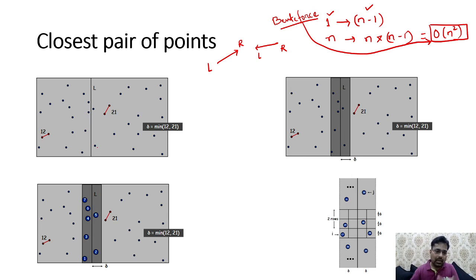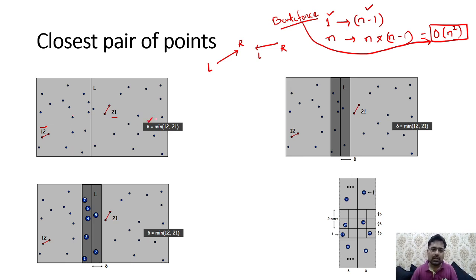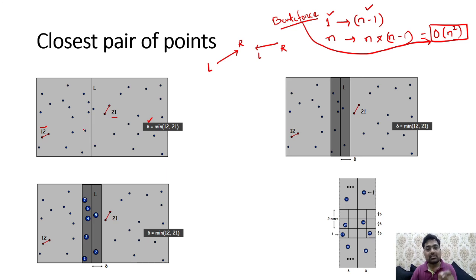Once we divide, the plane of n points is divided into n/2 on each side. For each half, we find the minimum distance — suppose 21 on one side and 12 on the other. Once we find the minimum from both halves, we introduce delta, which is a threshold. Out of these two minimums, we find which one is the overall minimum.